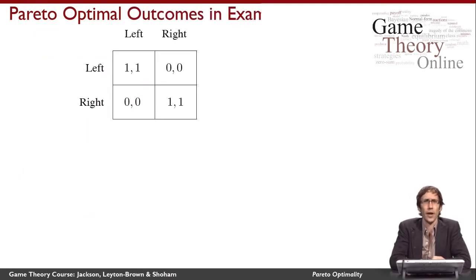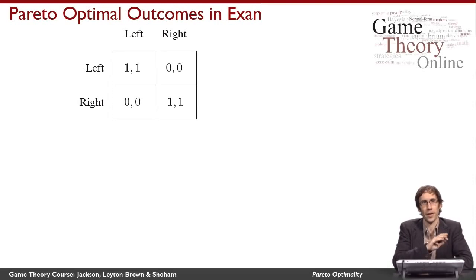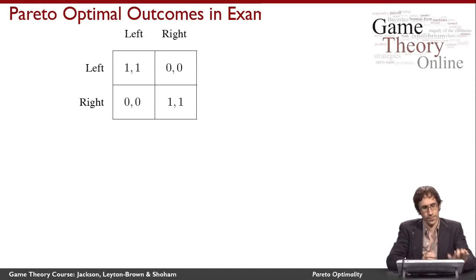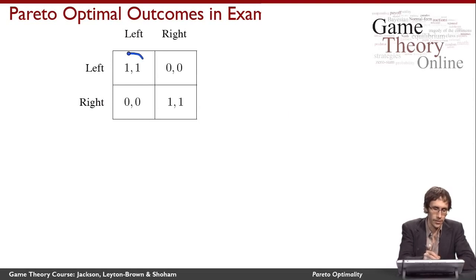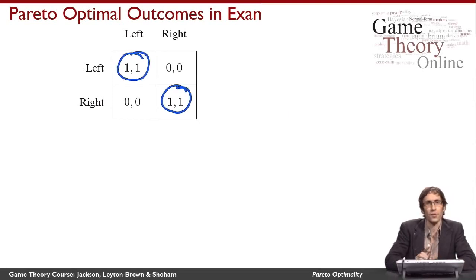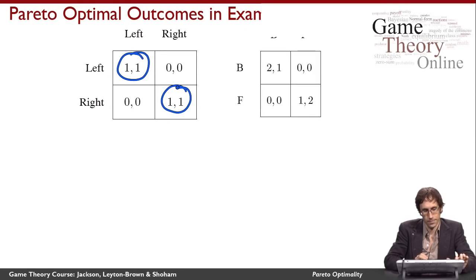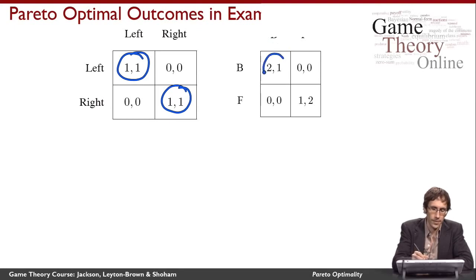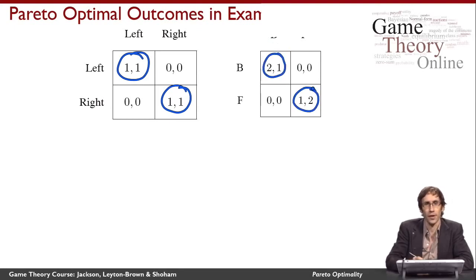Let's look at our example games and identify Pareto optimal outcomes. I encourage you to pause the video when I've put up a game and think for yourself before I identify them. First, the coordination game — these two outcomes are both Pareto optimal. In the battle of the sexes game, these two outcomes are again Pareto optimal. The change in payoffs here doesn't make a difference.